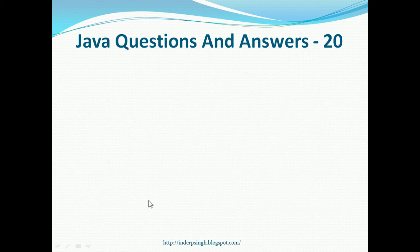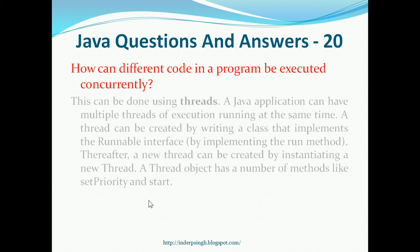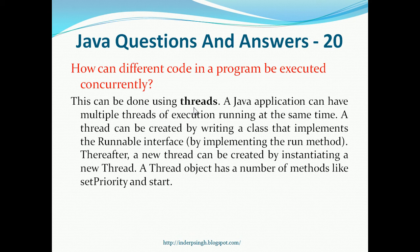Question 20. How can different code in a program be executed concurrently — that means at the same time? This can be done using threads. A Java application can have multiple threads of execution running at the same time. A thread can be created by writing a class that implements a Runnable interface, which means we have to implement the run method of this interface. Thereafter, a new thread can be created by instantiating a new Thread object. A Thread object has a number of methods like setPriority and start.